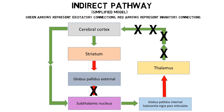The inhibition of these thalamic neurons thus inhibits movement. This activity in the indirect pathway is thought to antagonize the activity of the direct pathway, and act to keep unwanted movements from occurring.